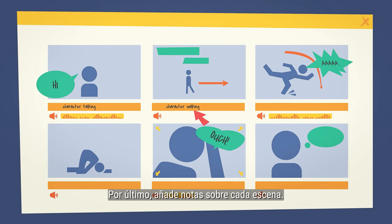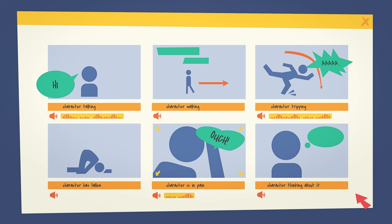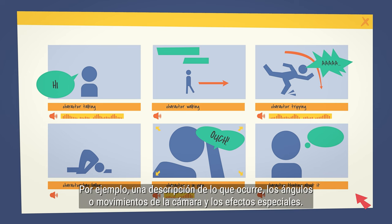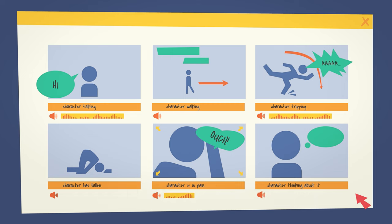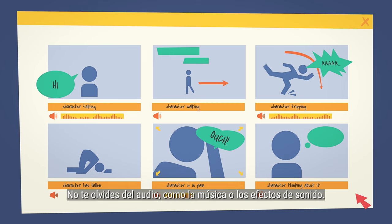Finally, add in any notes about each scene. This might include a description of what's happening, camera angles or movement and any special effects. Don't forget about audio like music or sound effects.